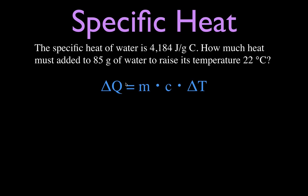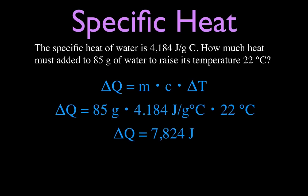So we know, we want to find how much heat. This is the change in heat, so we're solving for the change in heat. We just multiply the mass, 85 times C, times the change in temperature. We just do that, and we get that it would take about 7,824 joules of heat to raise 85 grams of water 22 degrees Celsius. That's number one.